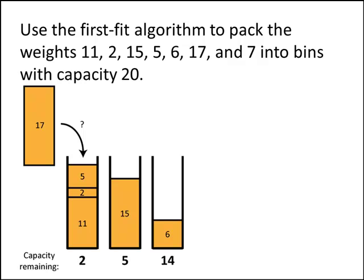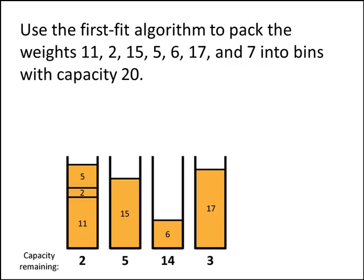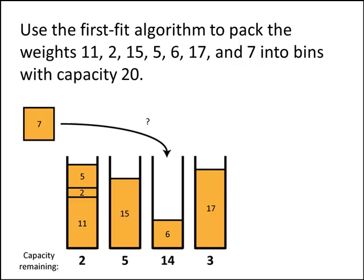Our next weight is a big 17. It doesn't fit into the first bin, doesn't fit into the second bin, doesn't fit into the third bin, so we have to create a fourth bin to fit weight 17. We've got one more weight, that's weight 7. It doesn't fit into the first bin, doesn't fit into the second bin, but it does fit into the third bin, and so that's where our weight goes. This is the result of using the first fit algorithm to pack these weights.